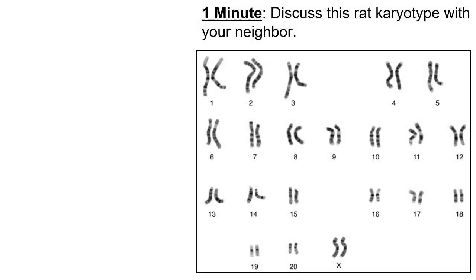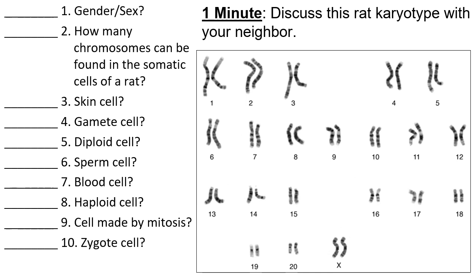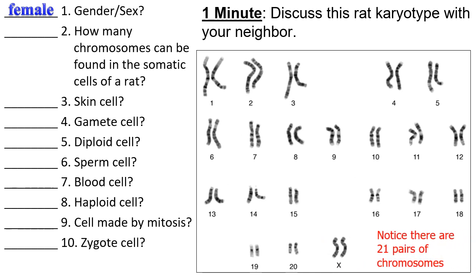Let's practice some of the vocabulary from this slideshow using the rat karyotype. Question one: what is the sex of the rat used to make this karyotype? You can see the XX chromosome combination — the answer is female. For the remaining questions about chromosome counts: rats have 21 pairs of chromosomes, so the diploid number is 42 and the haploid number is half of that, which is 21. You'll see the numbers 42 and 21 throughout questions 2 through 10.